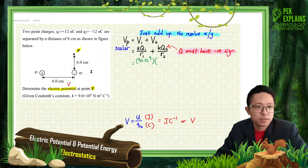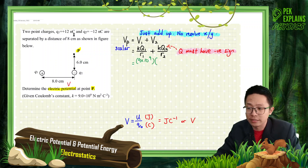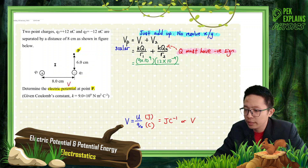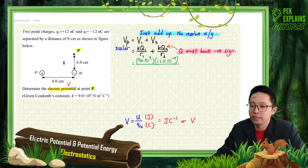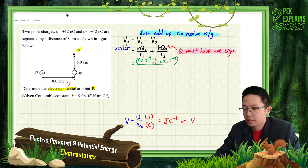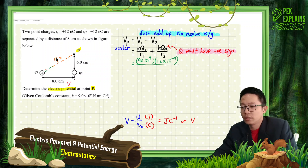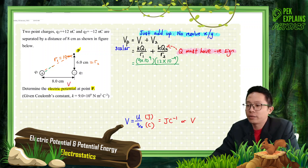For Q1, that's 12 nanocoulombs — nano is 10 to the negative 9. Divided by R1: using the Pythagorean theorem on the right-angle triangle with sides 8 cm and 6 cm, we get R1 equals 10 cm, which is 0.1 meter. Note that for potential, R has no square — unlike force and electric field where R is squared.